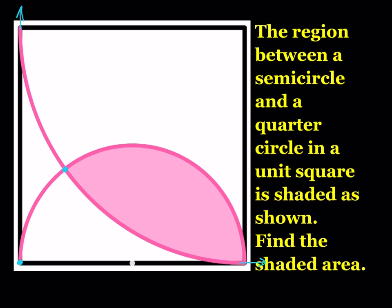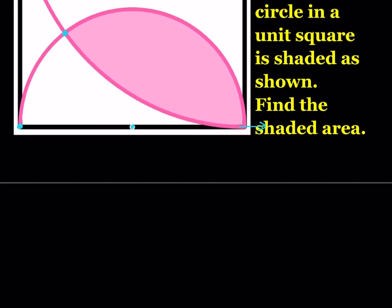First, let's find the equation of the semicircle. Since we're in a unit square, the center is going to be at (1/2, 0) and the radius is going to be 1/2. So the equation for our semicircle is (x − 1/2)² + y² = (1/2)² = 1/4.